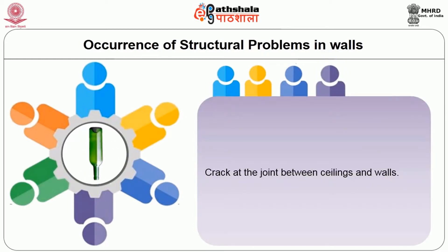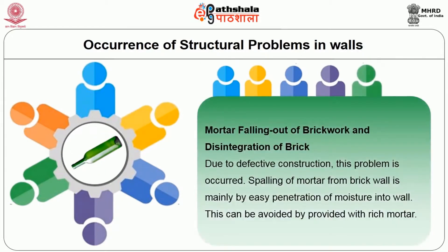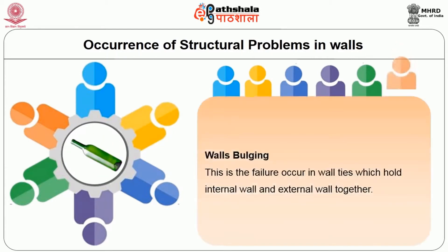Other wall defects include cracking at the joint between ceilings and walls, and falling out of brickwork and disintegration of bricks. Due to defective construction, spalling of mortar from brick walls is mainly caused by easy penetration of moisture into the wall; this can be avoided by using rich mortar. Wall bulging is the failure occurring in wall ties which hold the internal wall and external wall together.